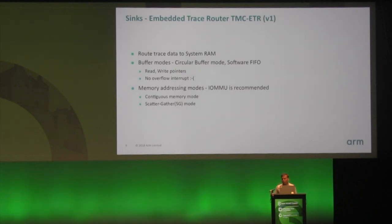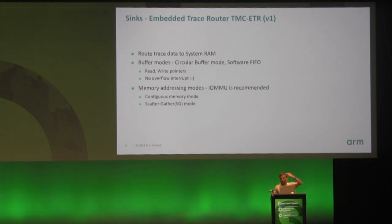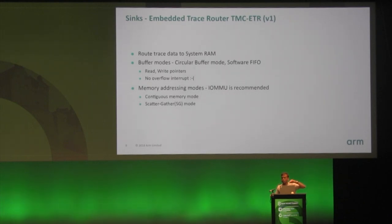Moving on to the sink — the Embedded Trace Router, which can route trace data to system RAM. It can use the given memory in different modes. In Circular Buffer mode, the ETR starts running from the top of the buffer, and the moment it hits the end it wraps around and keeps overwriting the buffer. You have a potential chance of losing data unless you collect it before it overlaps. Unfortunately there is no buffer overflow interrupt, so you don't know when that is happening.